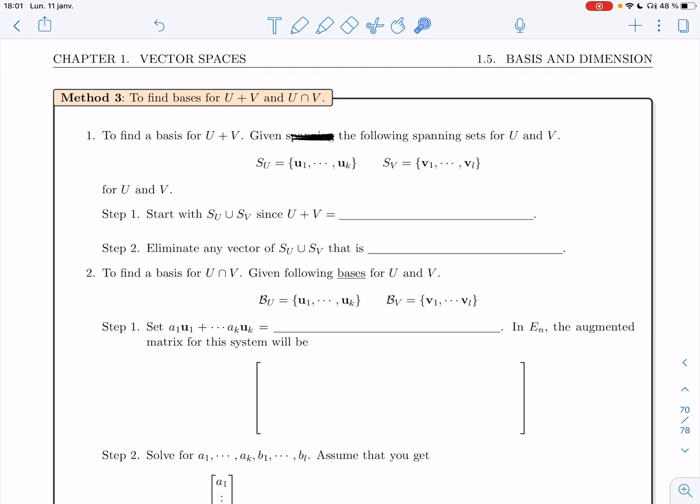All right, in the last example we found a basis for U plus V and a basis for U intersection V, using a basis for U and a basis for V. Let's recap the method in case you have to do a similar problem later on.